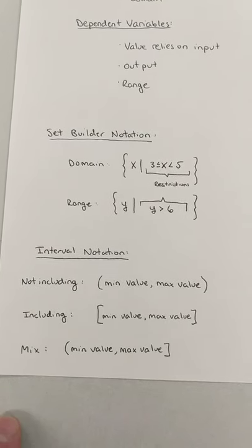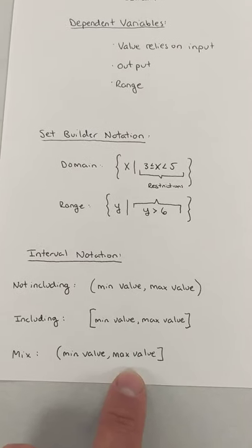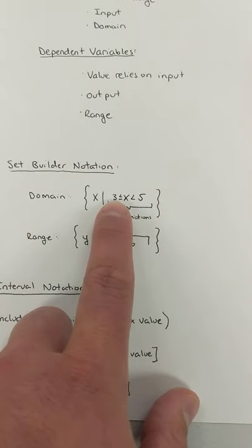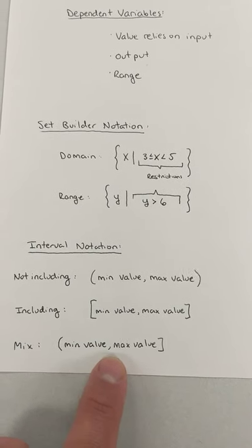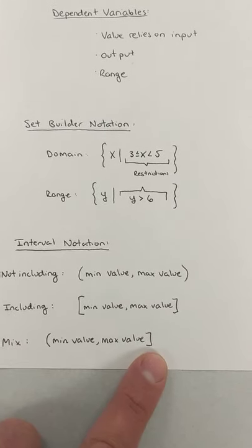If you wanted to do a mix, so maybe you're not including the minimum value, but you are including the maximum, kind of like up here, we're including the min, but we're not including the max. We can say parentheses, minimum value, comma, maximum value, and then include it.